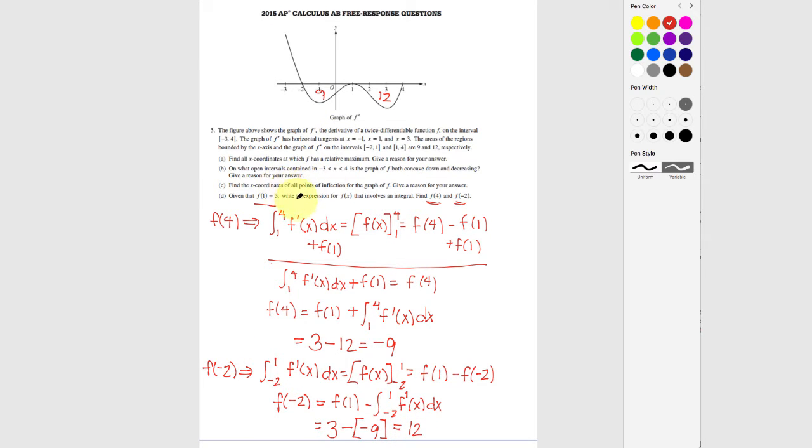The final thing that they're asking us to do is to write a general expression. What did I do? I'm just going to look at my answer here to figure out what that is. In general, my f of x is going to be given by my starting point, which is 3, plus the area under the curve from 1 to whatever x I'm going to, of f prime of x dx. And that's in general how I'm going to do it.